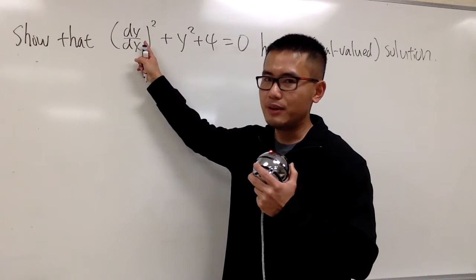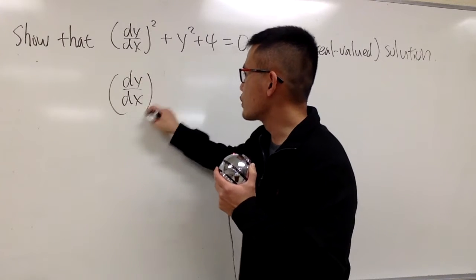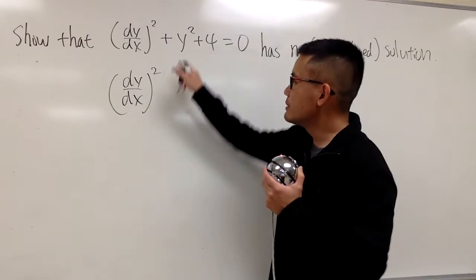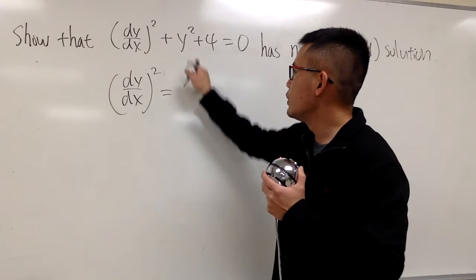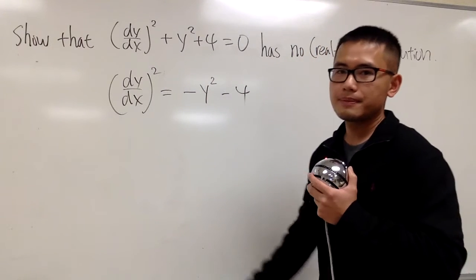All right, let's isolate this first, which is the first derivative, and then you square that. And let's move everything else to the right-hand side. And as you can see, we will end up with negative y-square and then minus 4.